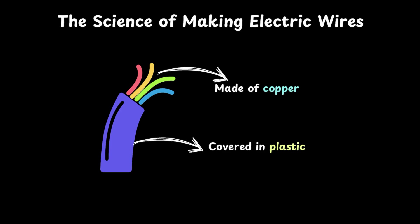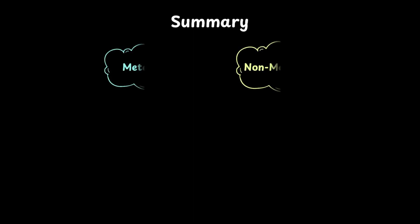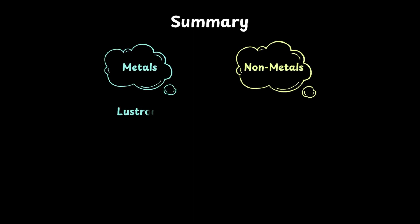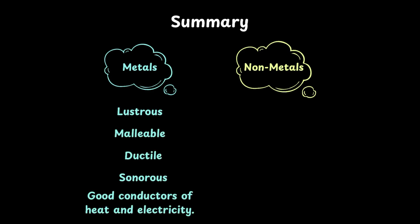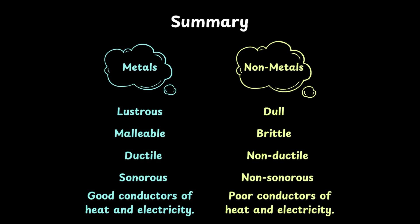Now that we have learnt about how different properties look on metals and non-metals, it's time for a quick summary. Metals are lustrous, malleable, ductile, sonorous, and good conductors of heat and electricity. Non-metals, on the other hand, are dull, brittle, non-ductile, non-sonorous, and poor conductors of heat and electricity.